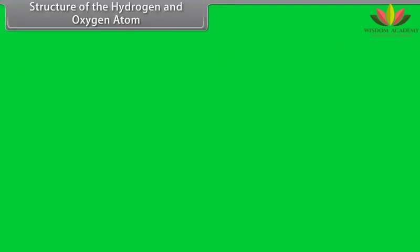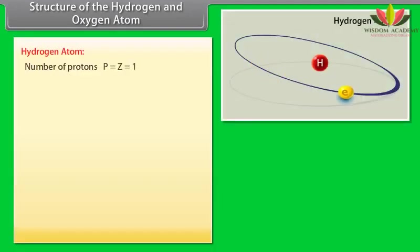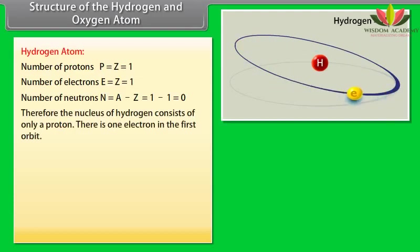Structure of the hydrogen and oxygen atom. Hydrogen atom. Number of protons, P is equal to Z is equal to 1. Number of electrons, E is equal to Z is equal to 1. Number of neutrons, N is equal to A minus Z which is equal to 1 minus 1 which equals 0. Therefore, the nucleus of hydrogen consists of only a proton. There is one electron in the first orbit.